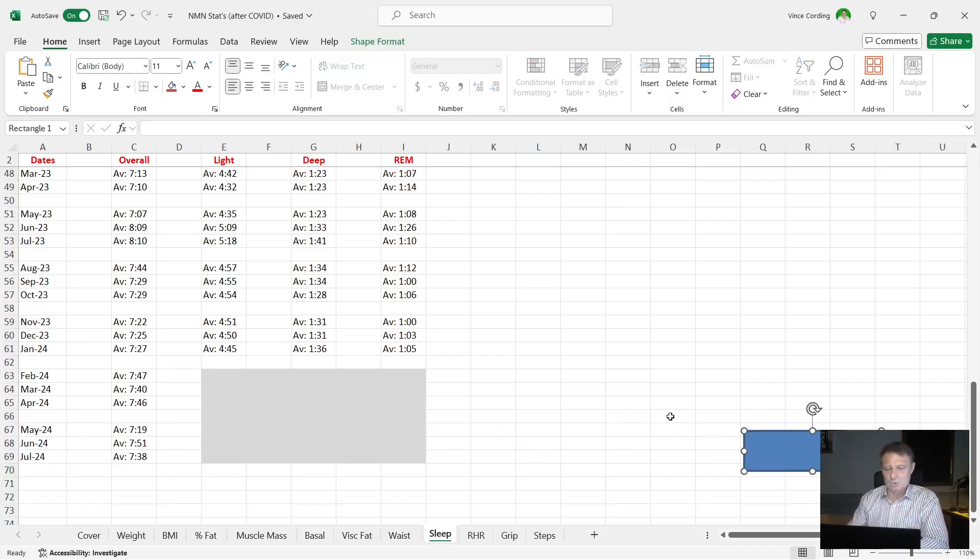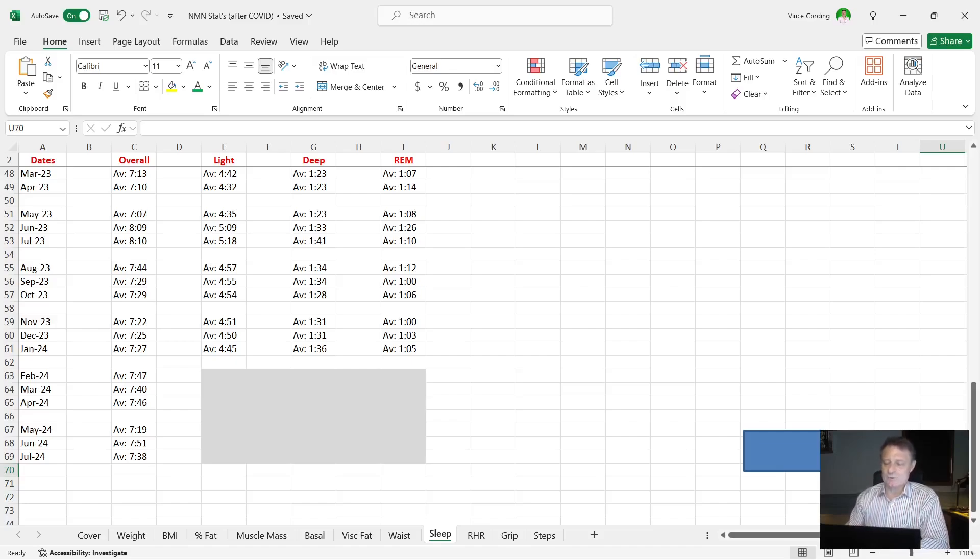In June it was seven hours and 51 as an average. In July, seven hours and 38. So I'm very happy with that. As a kind of a rough rule, if you like, I'm looking to get deep and REM sleep over one hour per night. I'm doing that easily with my deep sleep.